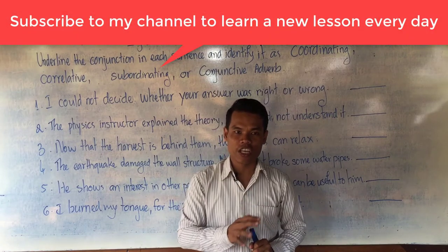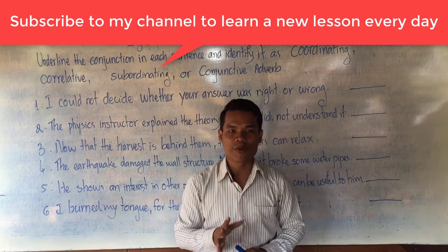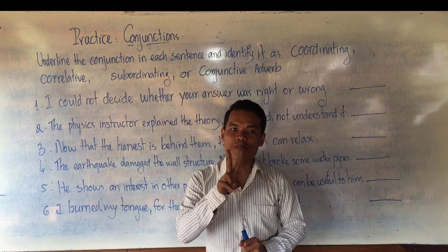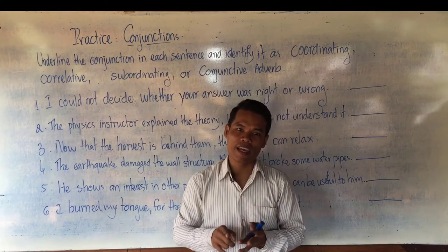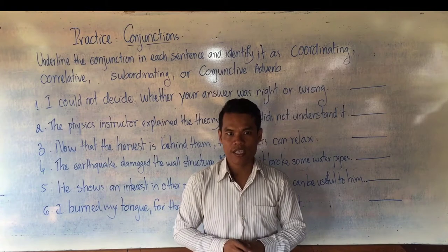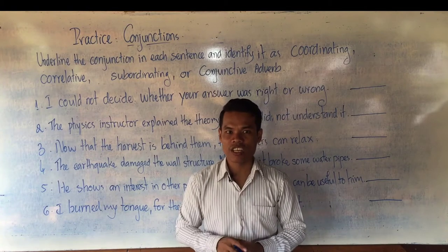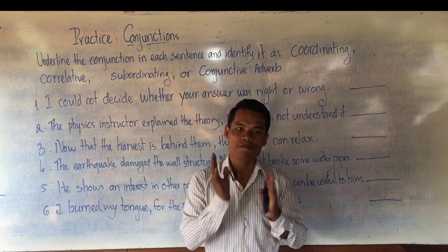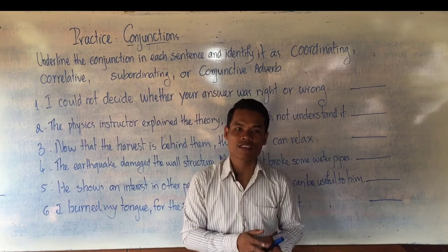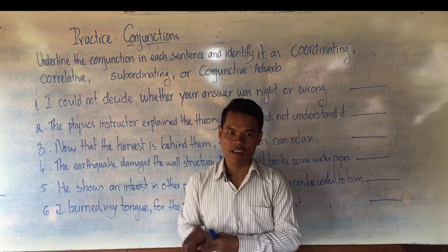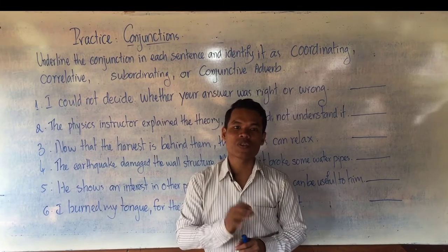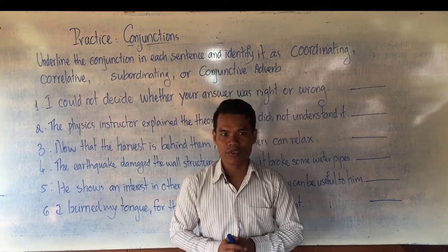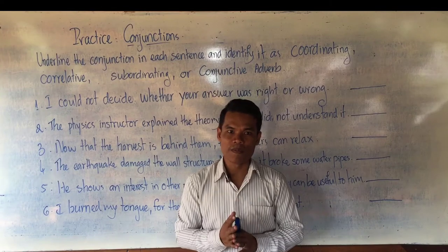When talking about coordinating conjunction, we think of FANBOYS. When we talk about correlative conjunction, we always think of pair conjunctions like 'both...and,' 'neither...nor,' etc. Subordinating conjunction can be used to connect two complete ideas — mostly we think of DC and IC: dependent clause and independent clause. Conjunctive adverbs are used in compound sentences.